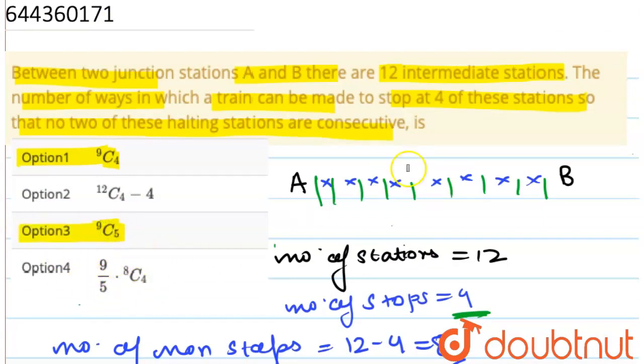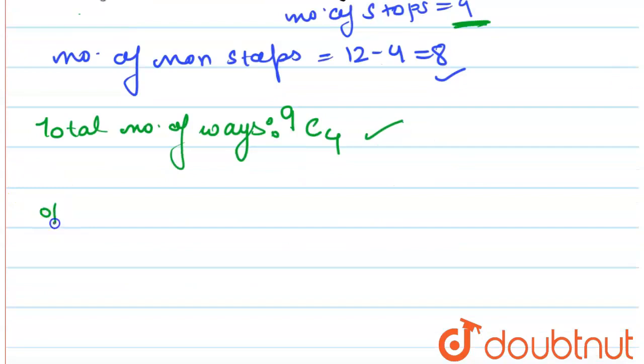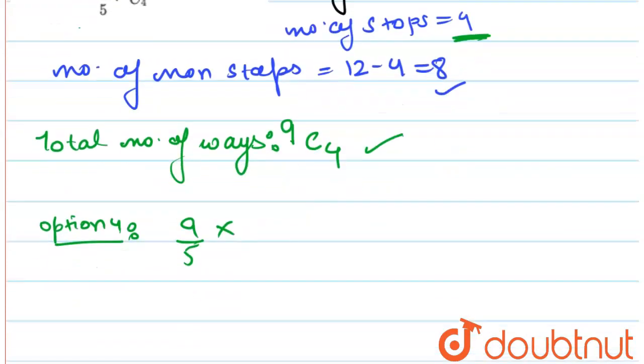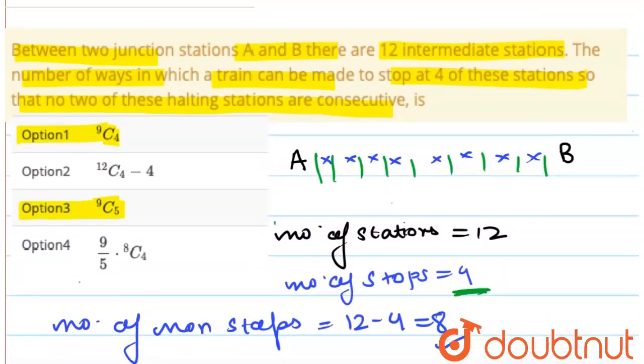Then, now let us solve this option number 4 which you are given as 9 by 5. Option number 4 is your 9 by 5 multiplied by 8C4. Now what is the value of 8C4? It's 70. So 9 by 5 into 70 is 126, which is your 9C4. So your option number 4 is also correct.